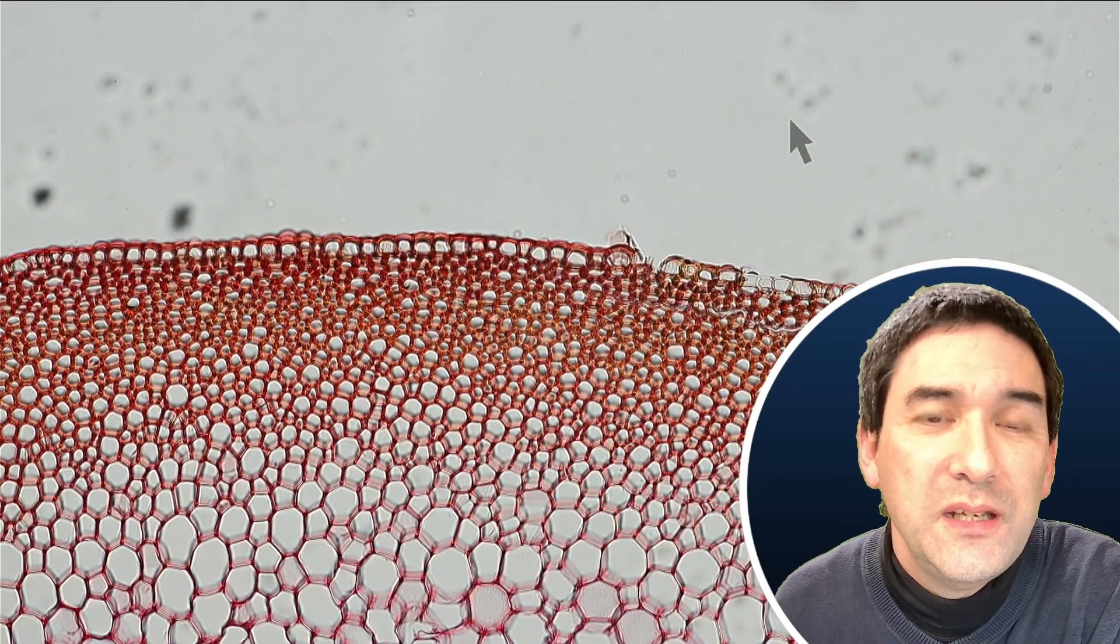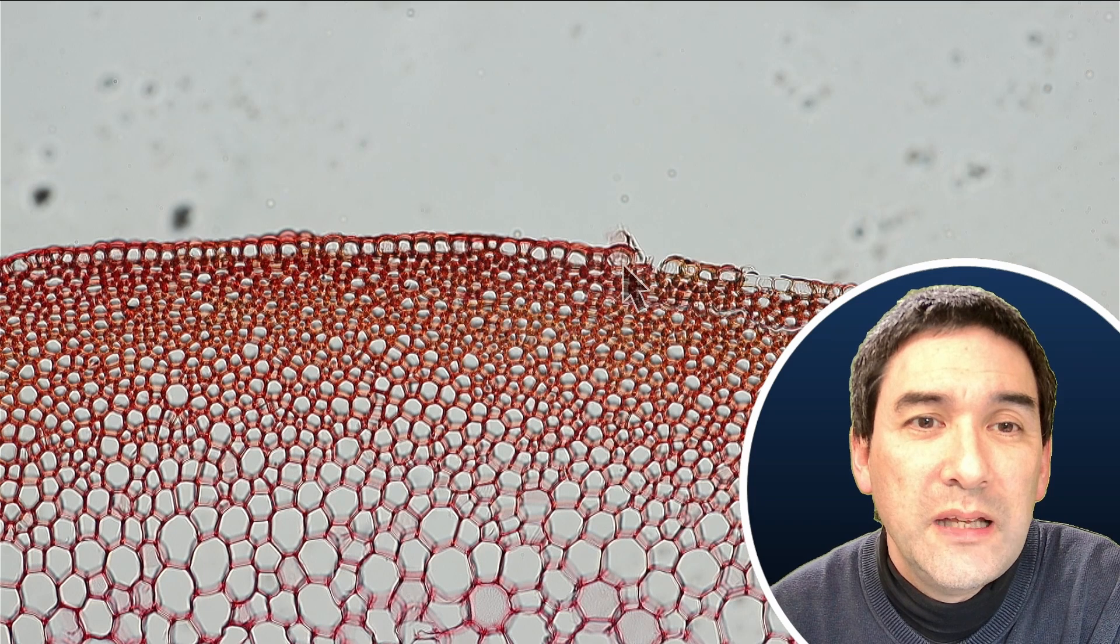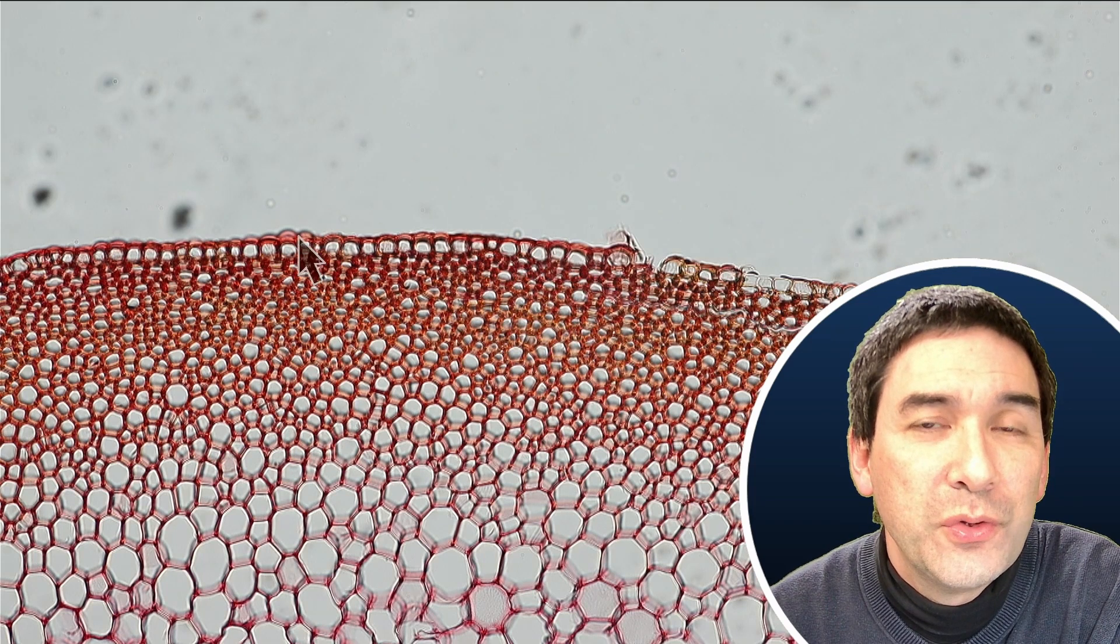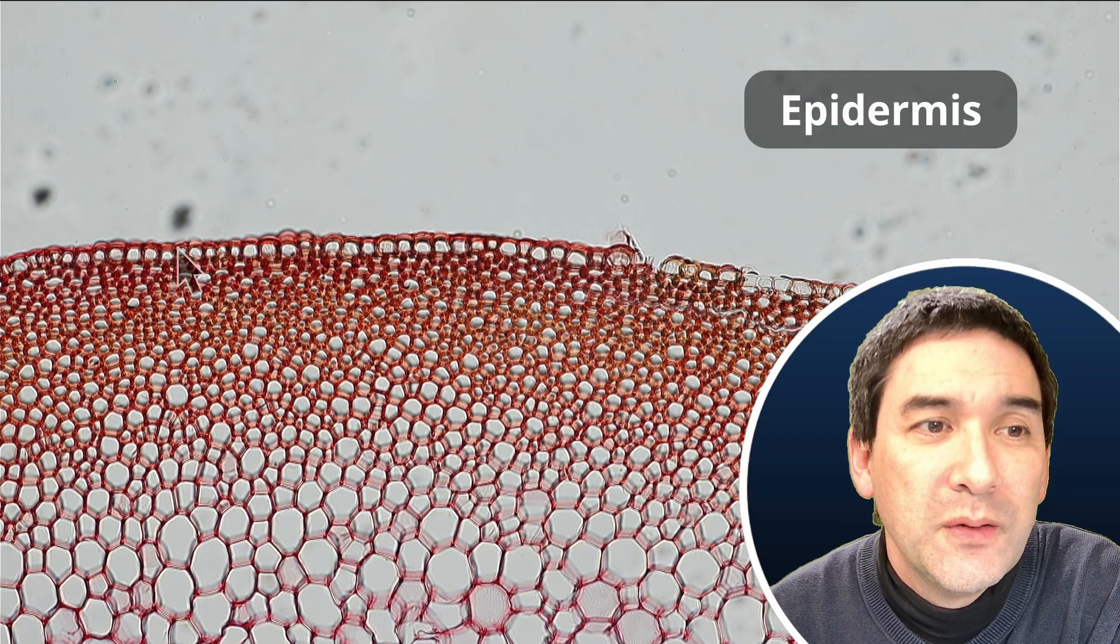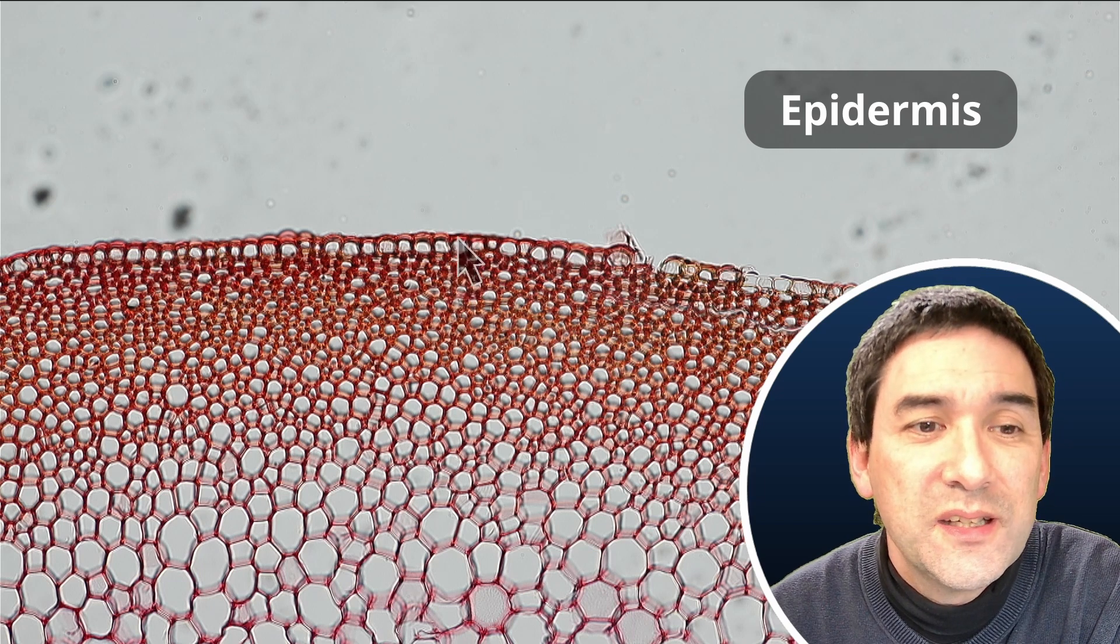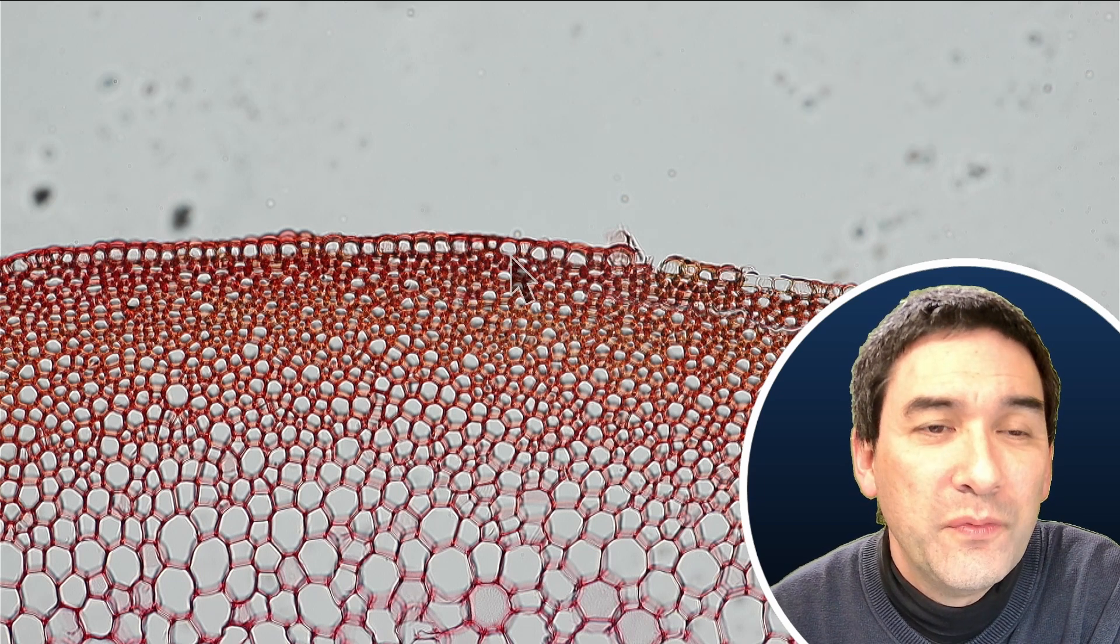Now when we look a little bit on the outside here, then we can see that this is also a layer of cells here on the outside. That is also referred to as the epidermis, which is the thin layer of cells that is on the outside of the stem.